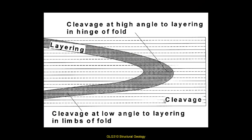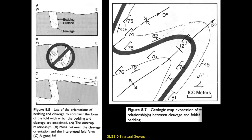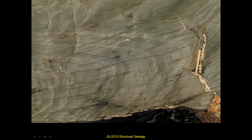The relationship between cleavage and folding is important. Cleavage forms basically perpendicular to the maximum shortening direction, so it cuts across the fold in a predictable way — right along the axial plane, which is called axial planar cleavage. As we go down the limb, there's an angular relationship between the limb layering and the cleavage. In this picture, at the fold hinge the cleavage is basically perpendicular to the layering, but on the limbs it becomes more at a lower angle.